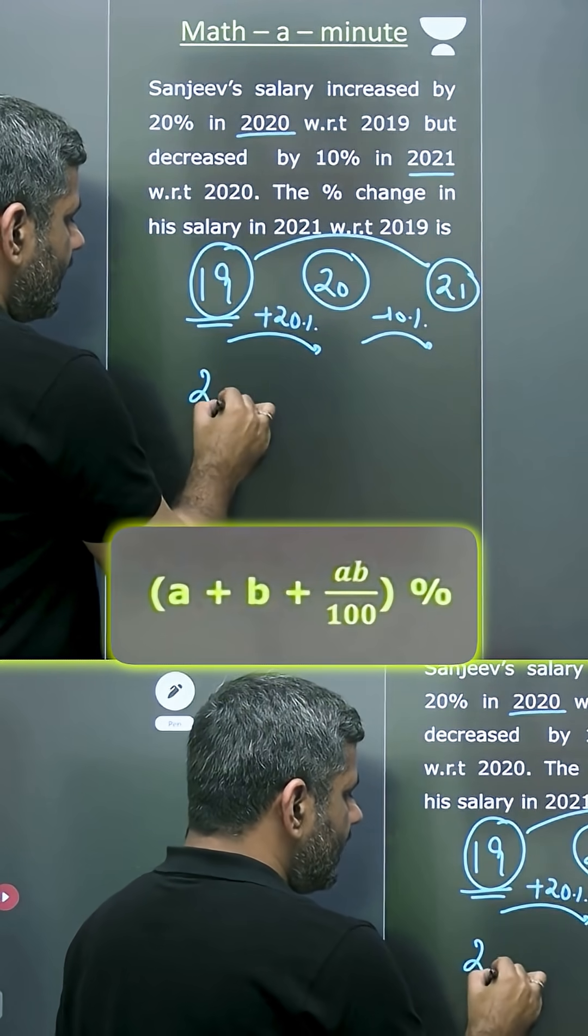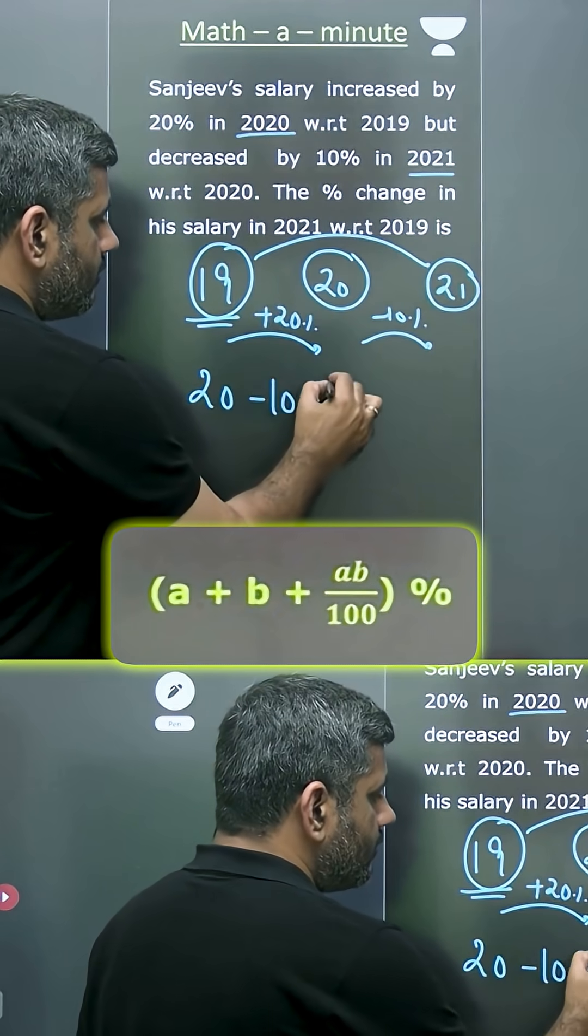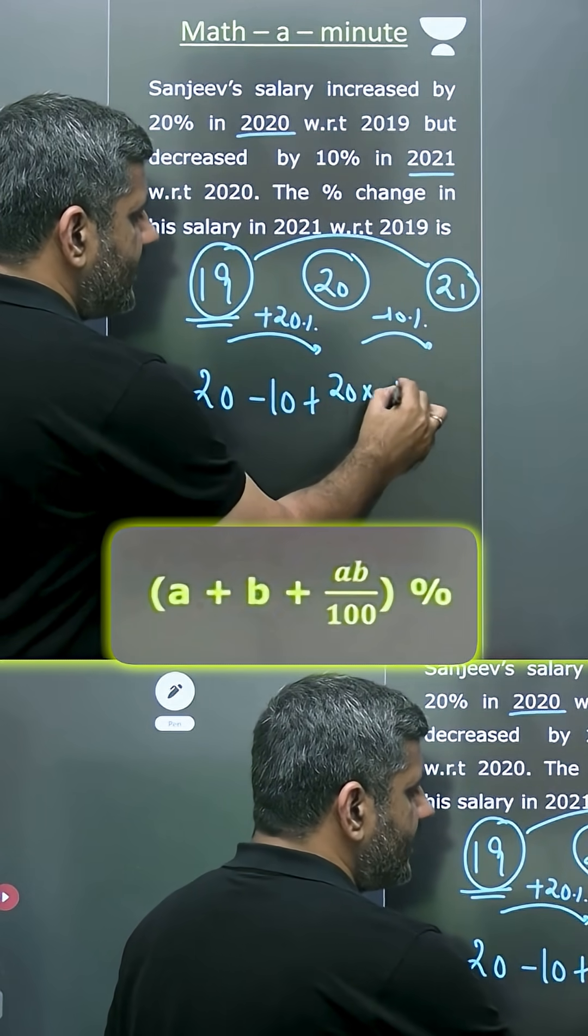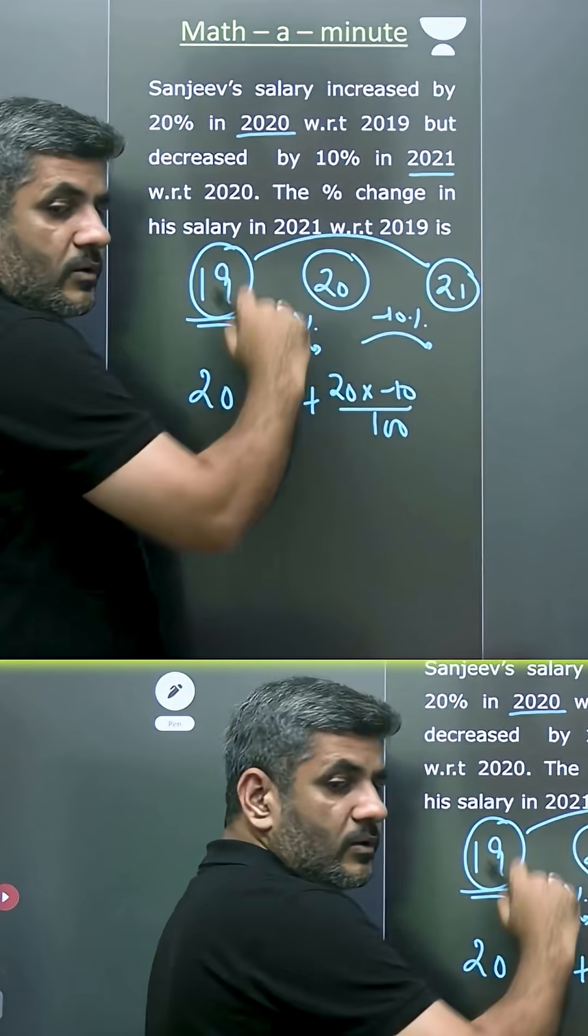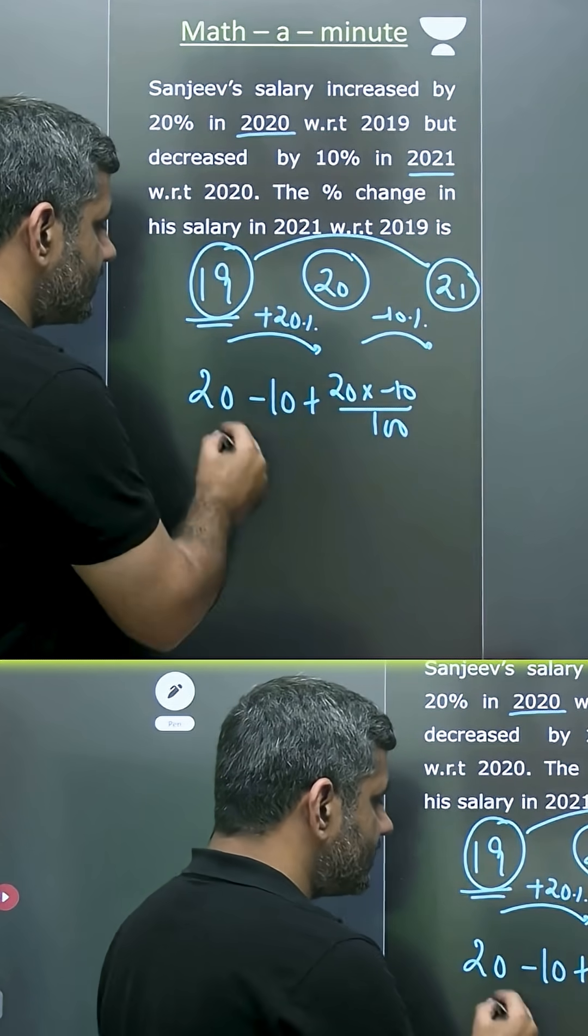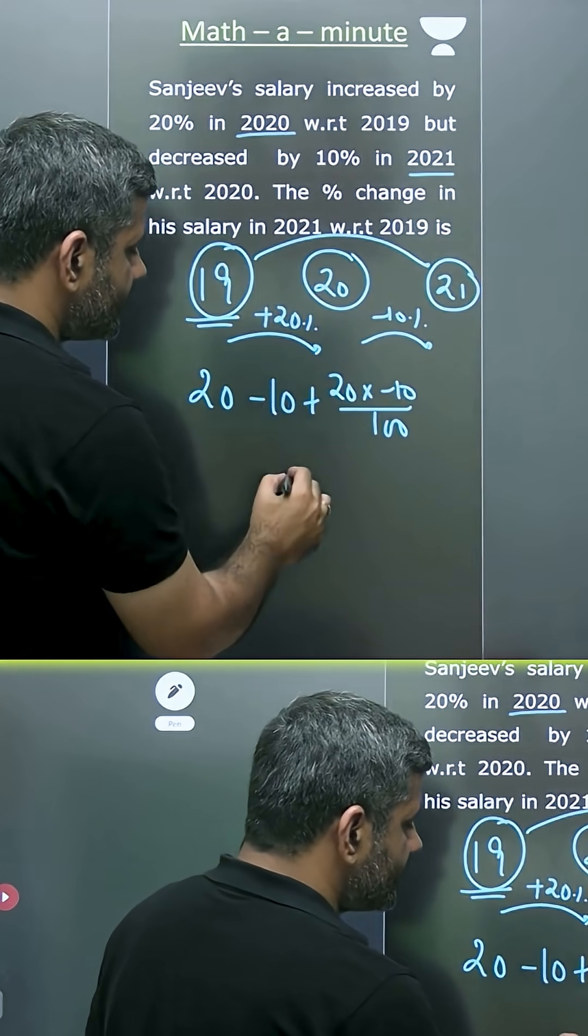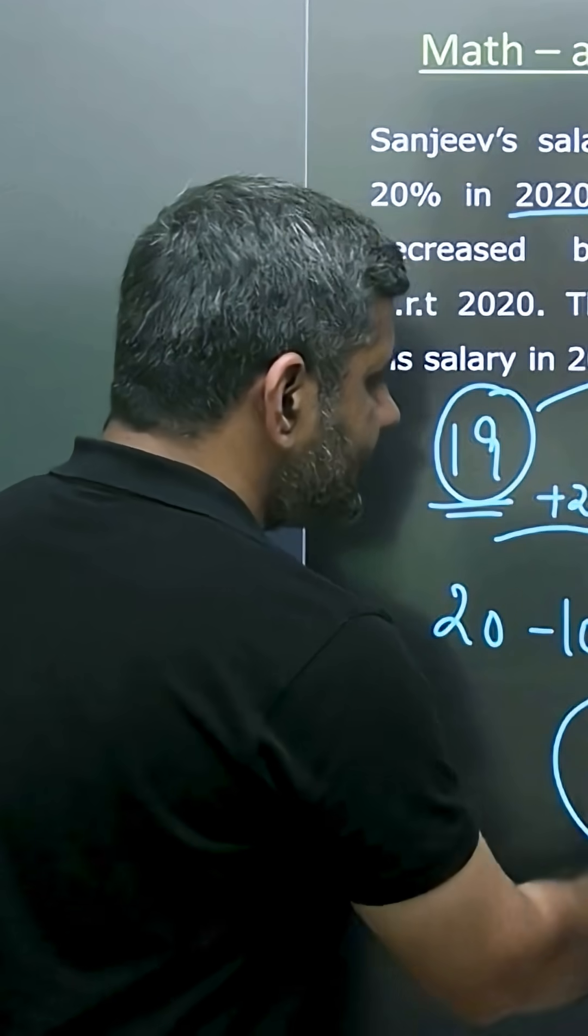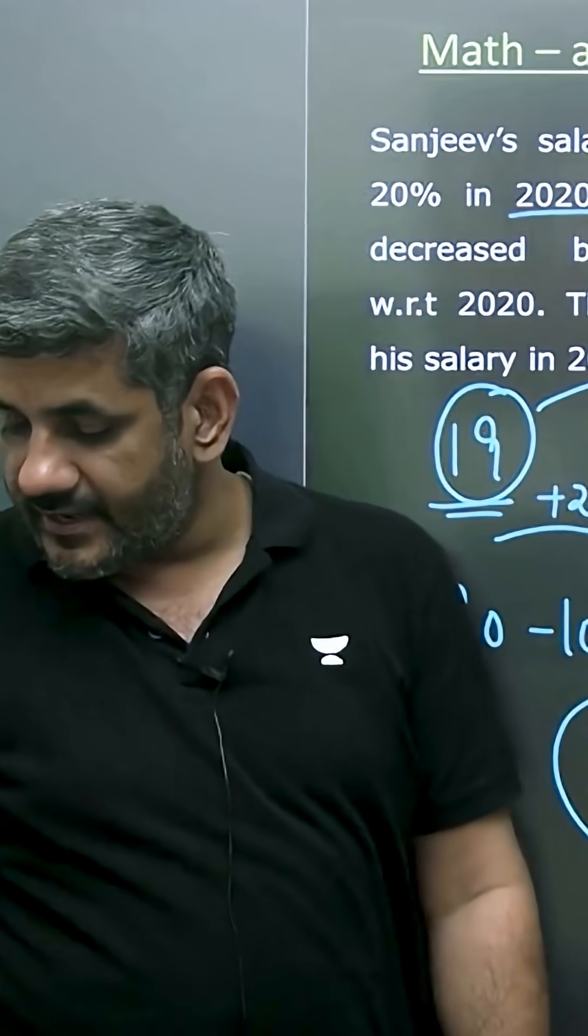Use that formula: A plus B plus AB divided by 100. Because there was a decrease, I'm using a minus sign with B. When you solve it, it gives you 8%. That means Sanjeev's net salary is 8% more than the initial salary.